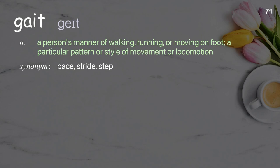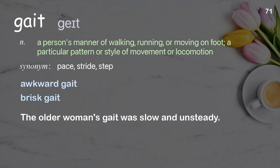Gait: a person's manner of walking, running, or moving on foot; a particular pattern or style of movement or locomotion. Examples: awkward gait; brisk gait. The older woman's gait was slow and unsteady.